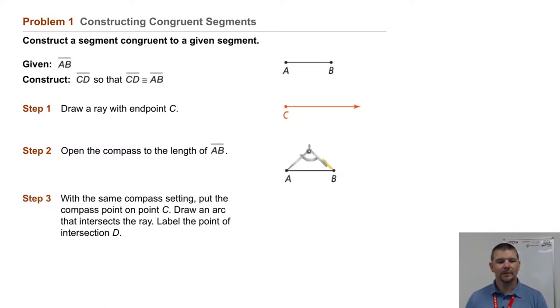Step three, with the same compass setting, put the compass point on point C. Draw an arc that intersects the ray. Label the point of intersection D.